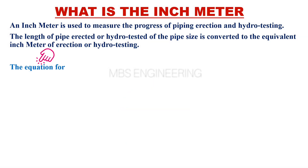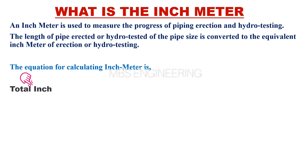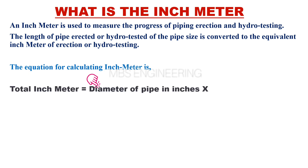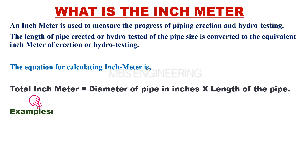The equation for calculating the inch meter is: Total inch meter equals the diameter of the pipe in inches multiplied by the length of the pipe. The below sample examples are for better understanding.